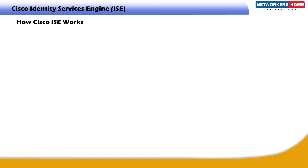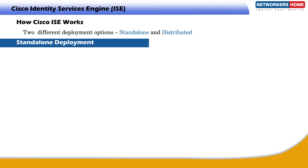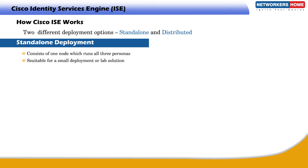ISE has two different deployment options: Standalone and Distributed. A standalone deployment consists of one node which runs all three personas. This is suitable for a small deployment or a lab solution. If you run a standalone solution on your production network, you have no redundancy.